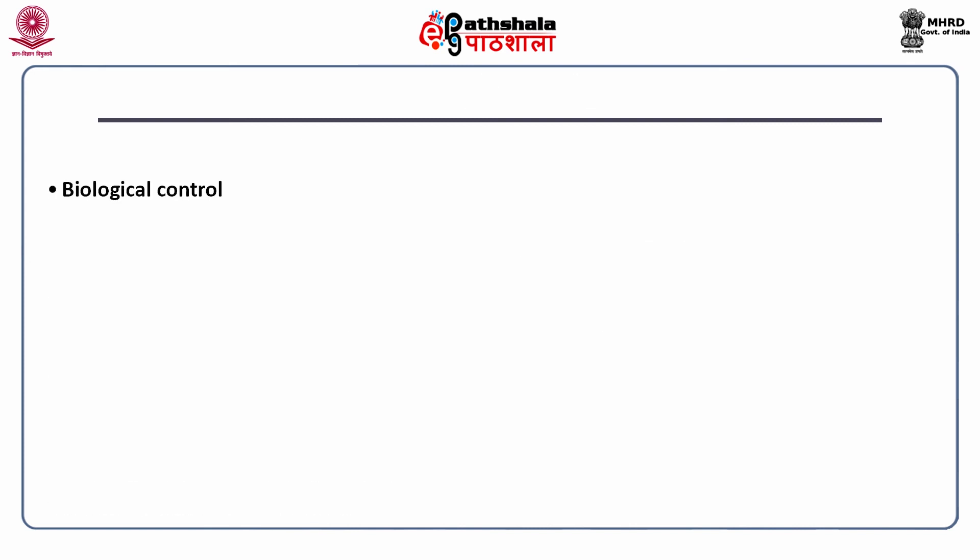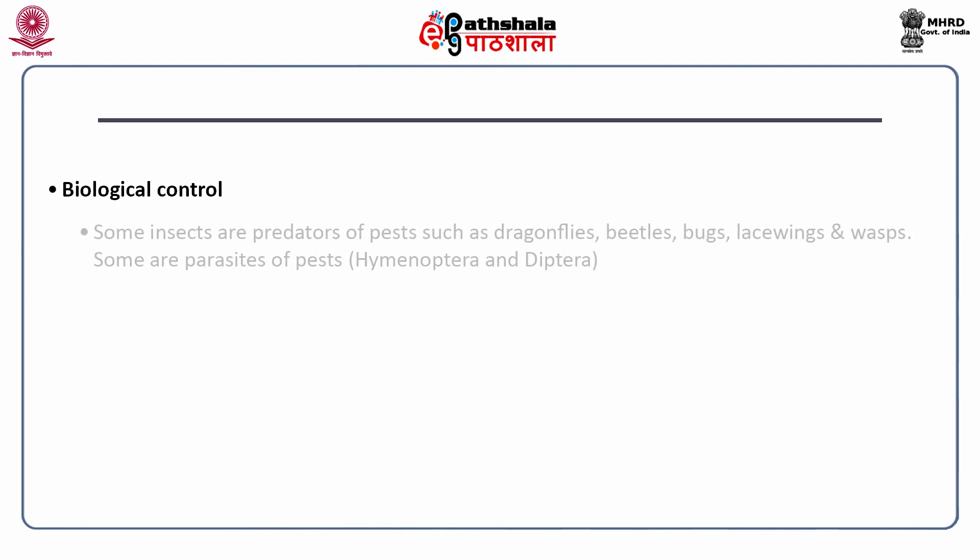Insects are also used in biological control. Some insects are predators of pests, such as dragonflies, beetles, bugs, lacewings and wasps. Some are parasites of pests, including those from the orders Hymenoptera and Diptera.